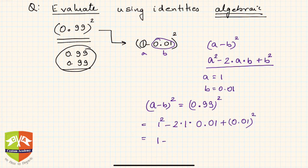If you see, this is nothing but 1 - 0.02 + 0.0001. I hope you know how to square a decimal number. There are two digits after the decimal, so if you square it there will be four digits after the decimal.